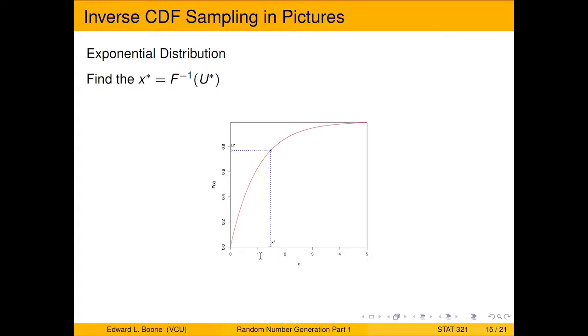I'm just going to use the idea of inverse functions. So I take a random draw from here, bring it over, hit the CDF, take it down vertically, and hit the x-axis. And this becomes my random draw.